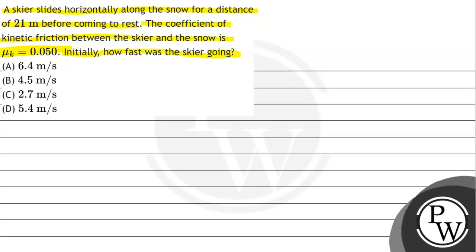Initially, how fast was the skier going? Option A: 6.4 m/s, Option B: 4.5 m/s, Option C: 2.7 m/s, Option D: 5.4 m/s. So in this question...